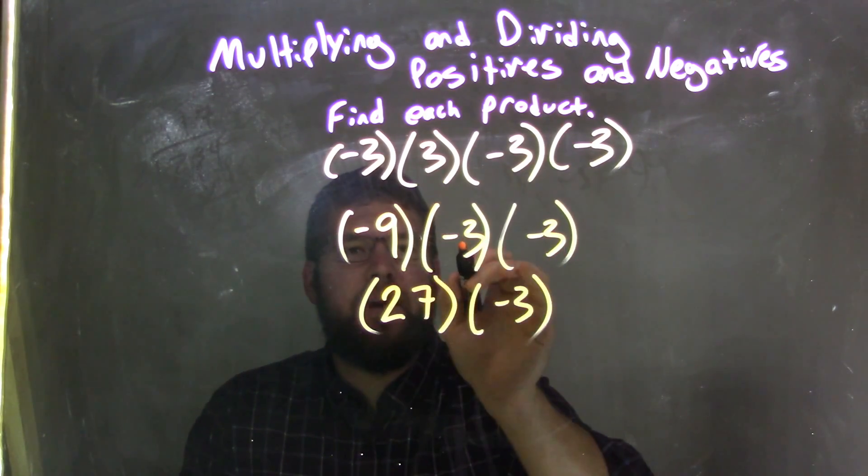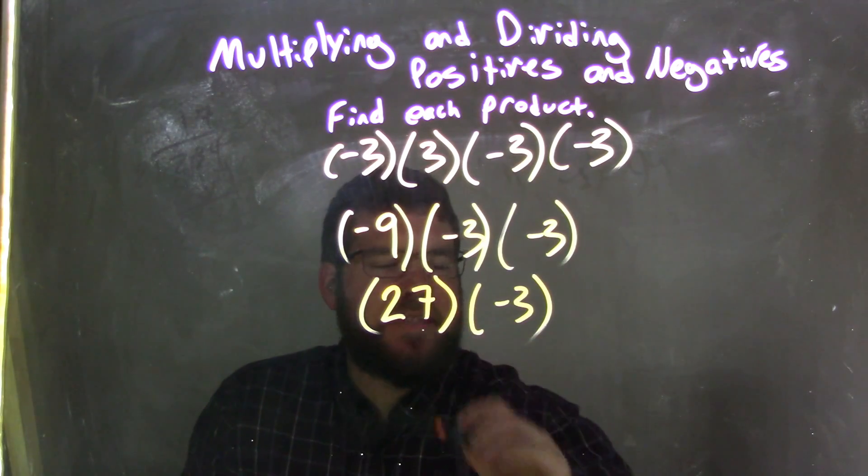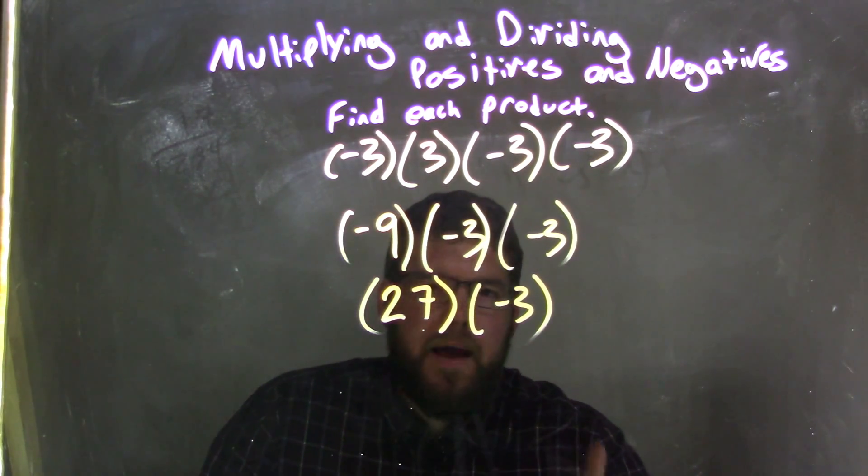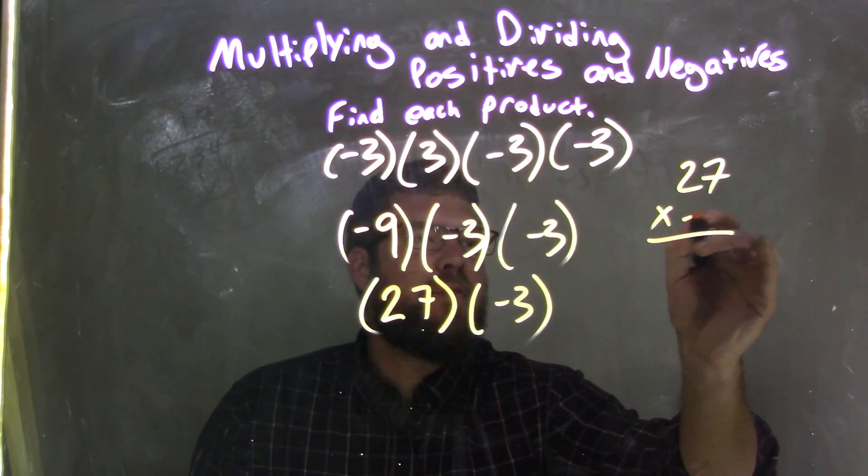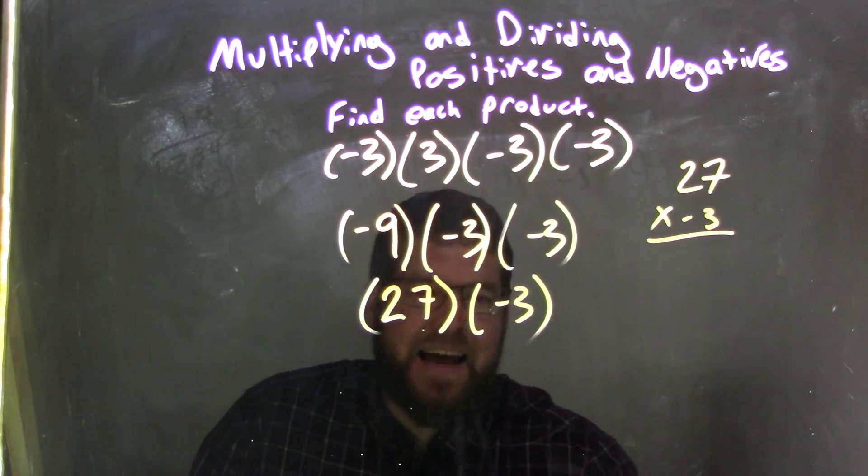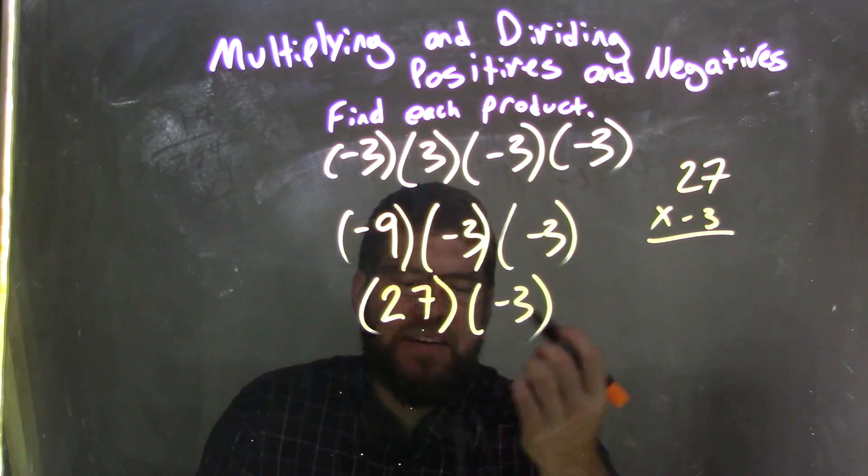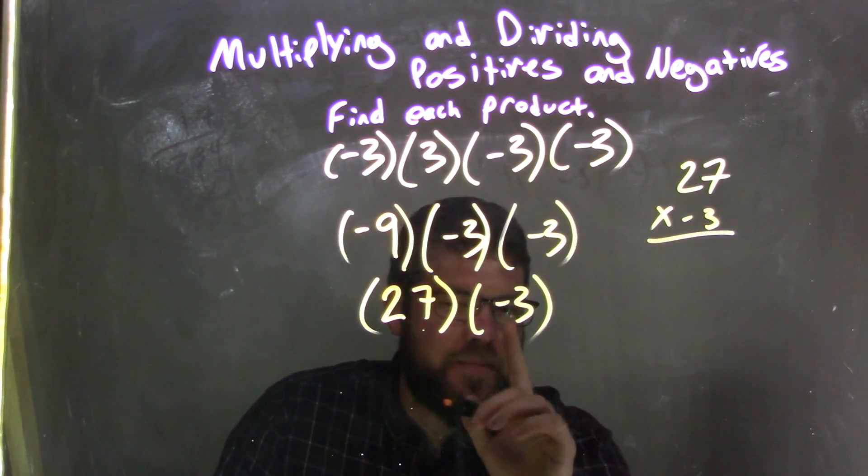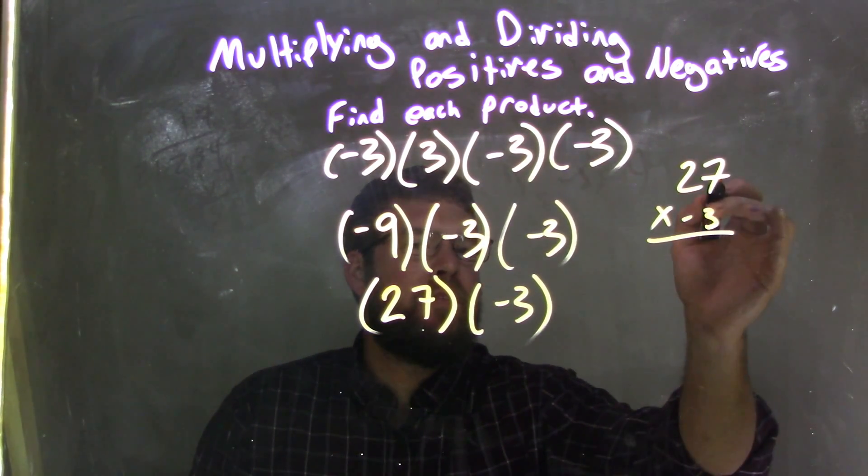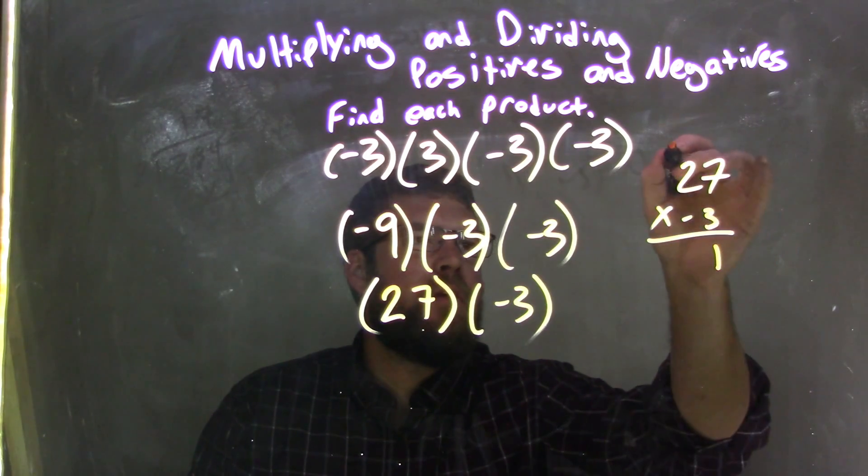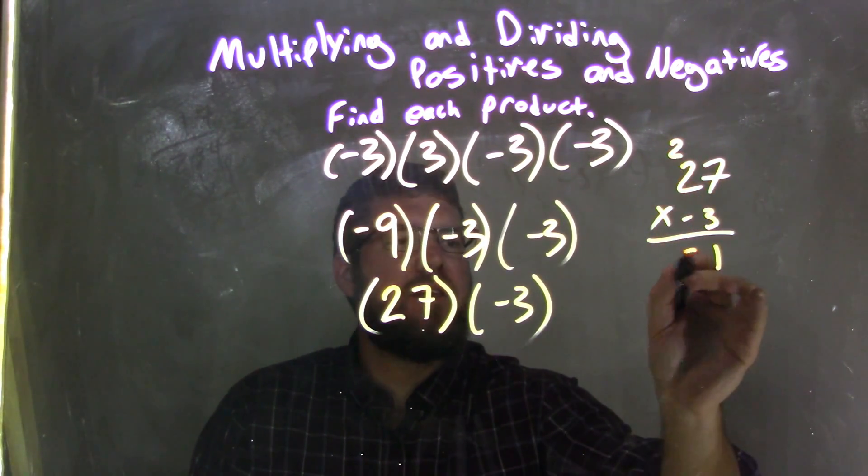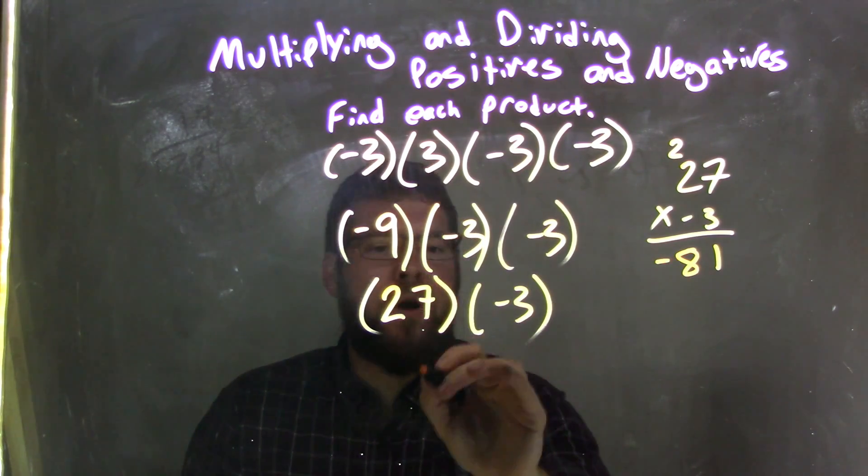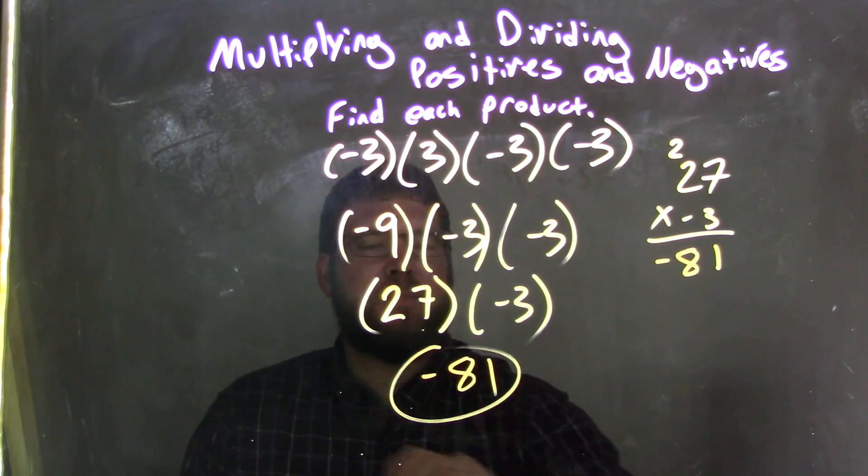So negative 9 times negative 3 is a positive 27. Now we have 27 times negative 3. I'm going to use the traditional method here: 27 times negative 3, knowing that a negative times a positive, or a positive times a negative, is going to be a final answer of negative. So 3 times 7 is 21, carry the 2. 3 times 2 is 6, plus 2 is 8. And we have negative 81 as our final answer.